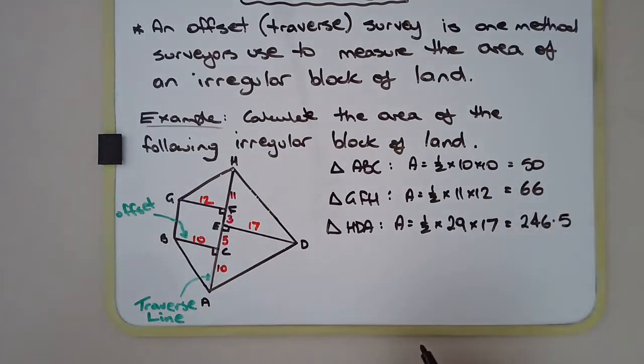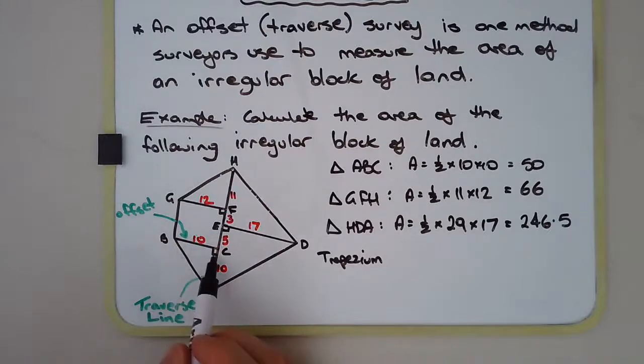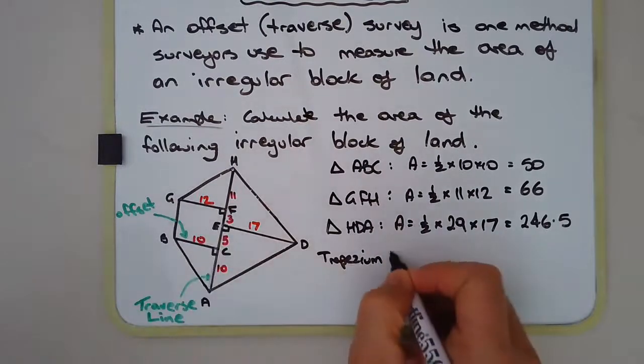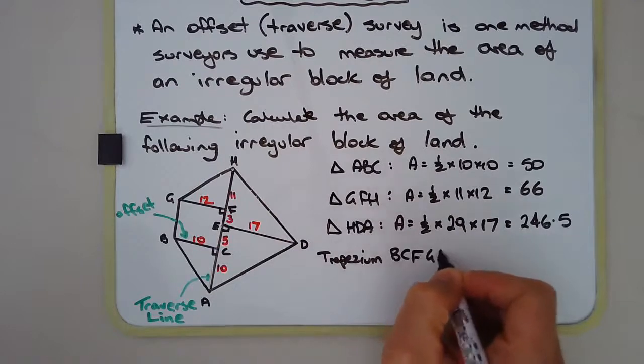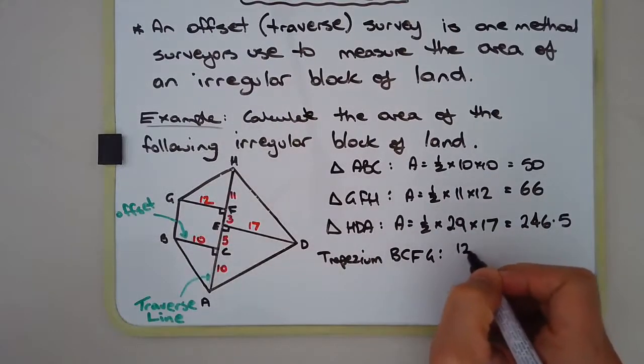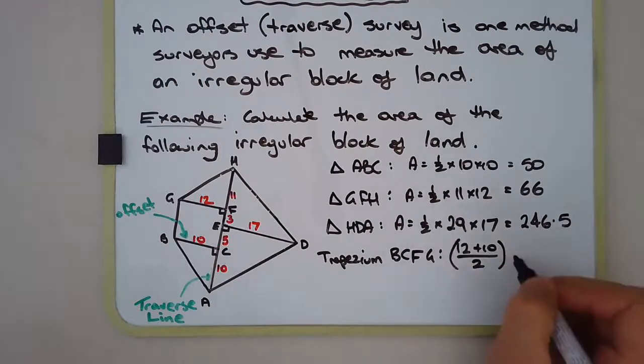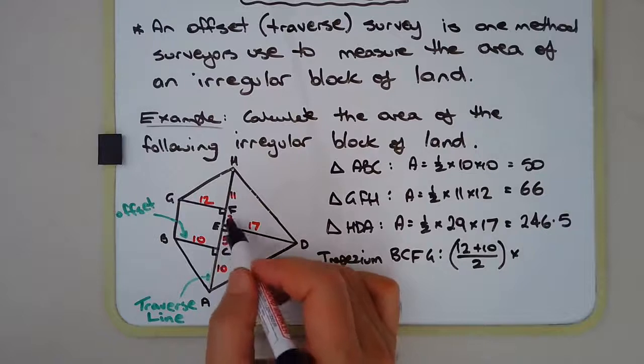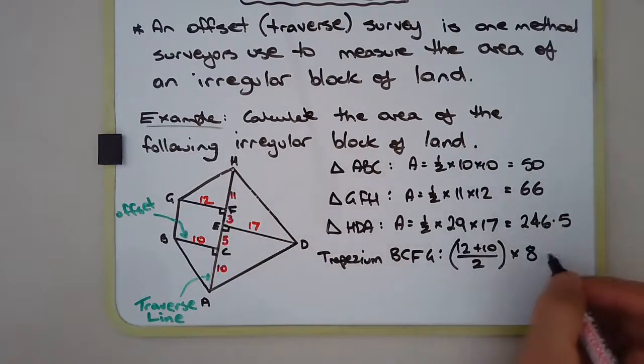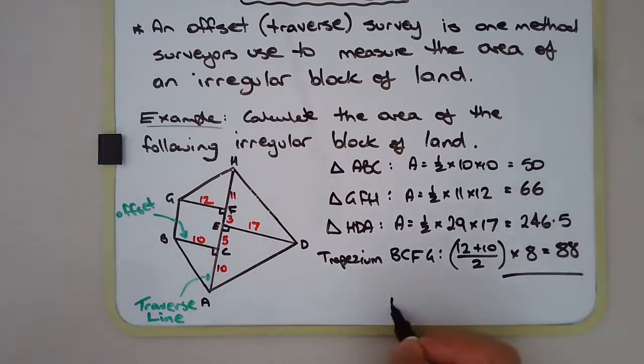And lastly, we have the trapezium. And it's the average of the parallel lines, if you recall. So 12 plus 10 over 2, and we're going to multiply that by the perpendicular height, which is 3 plus 5, which is 8. So the average of 12 and 10 is 11. 11 times 8 is 88. So the total area.